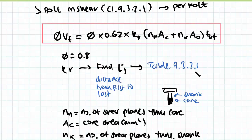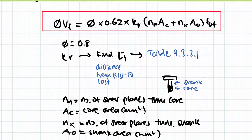And n is the number of shear lines through our core. Our core is our threaded area of our bolt. Our core area is the cross sectional area of our core. Our number of shear lines through the shank is NX, so that's through the top part. And the shank area is the cross sectional area of the unthreaded area of the bolt.